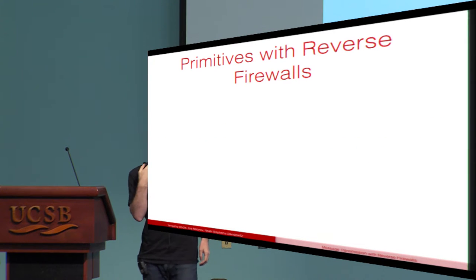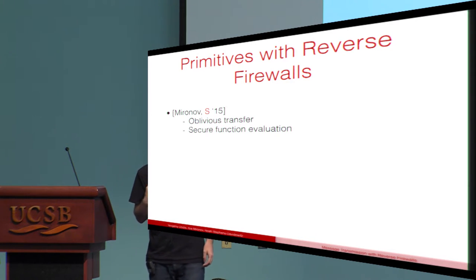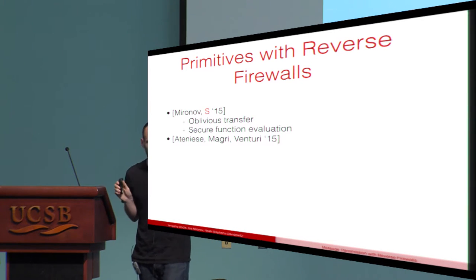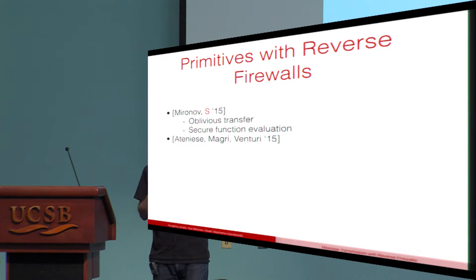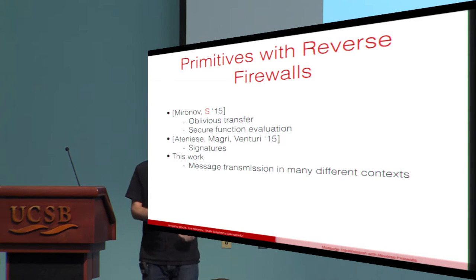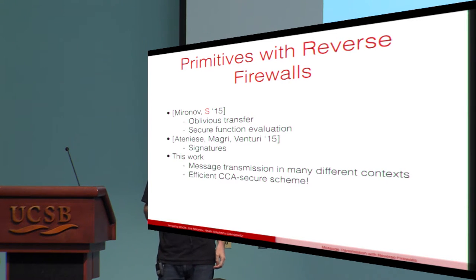So what can we actually do in this model? In our original paper, we showed that oblivious transfer and secure function evaluation are possible with reverse firewalls — which is rather surprising, because secure function evaluation is two-party crypto complete, giving you any functionality you want. Admittedly, very inefficiently. In follow-up work, Ateniese, Magri, and Venturi showed you can do signatures. In this work, we handle probably the most natural primitive: secure message transmission. Probably the most important result is an efficient CCA secure scheme.